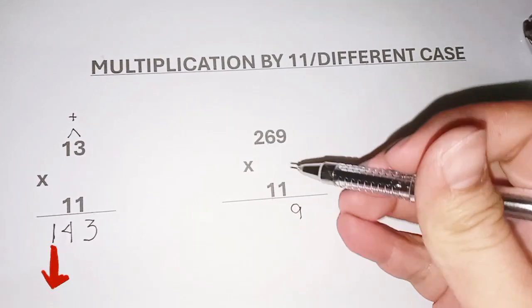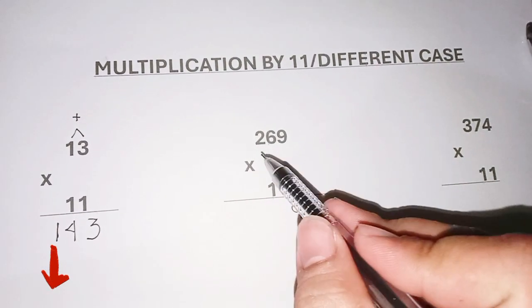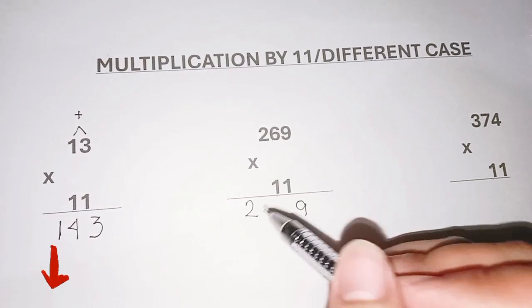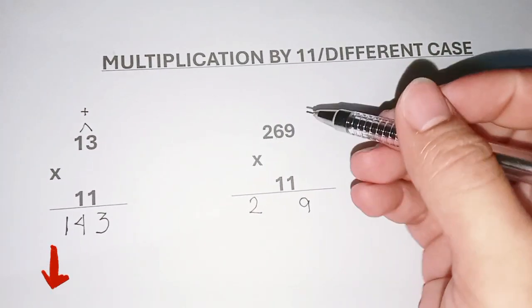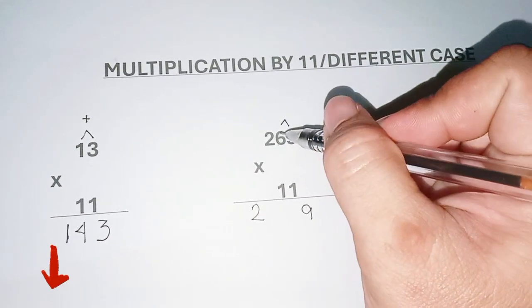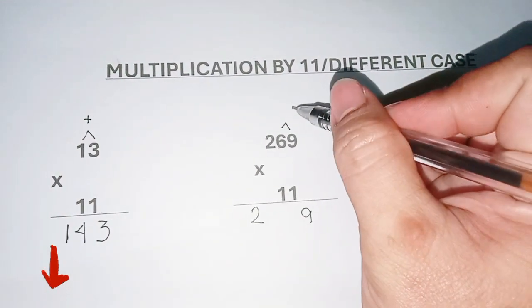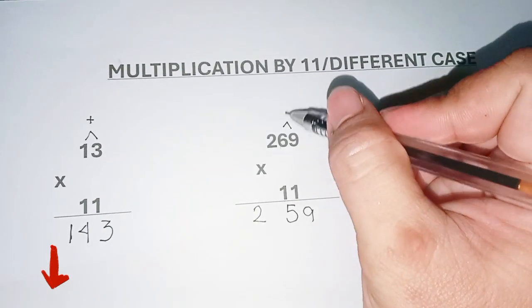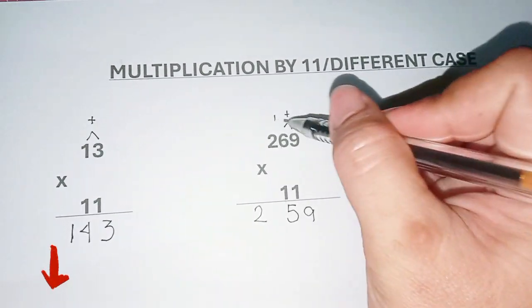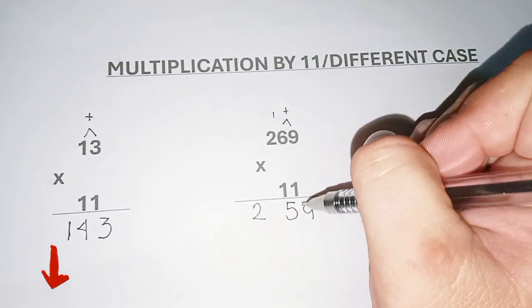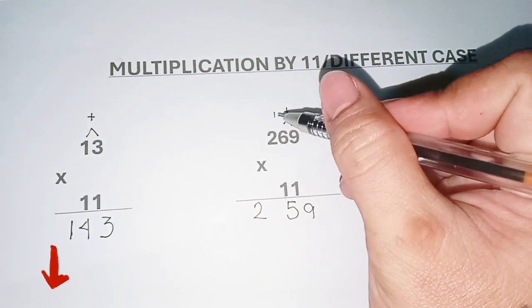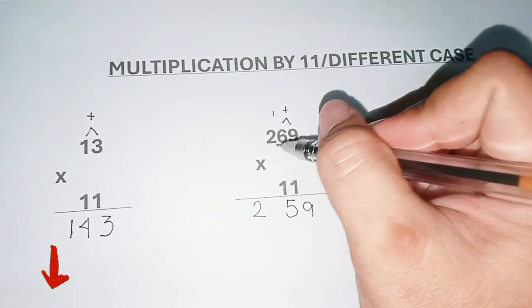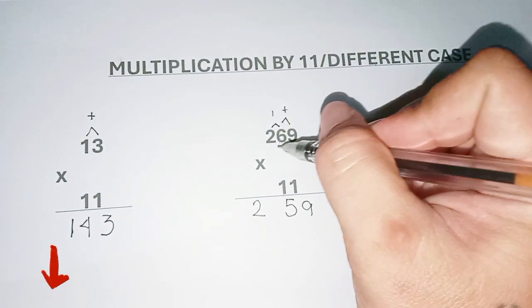Next case: three digits multiplied by 11. Copy the nine and copy the two, then put spaces inside. Nine plus six gives you 15 — write the five and carry one. Next, add the two and six, which gives eight.